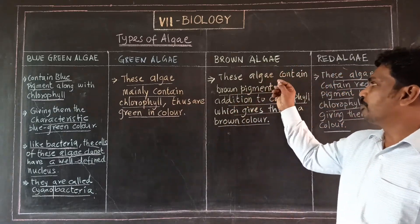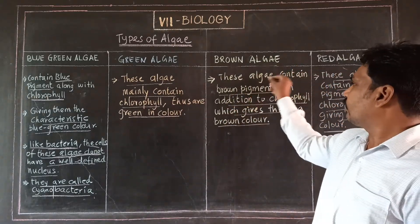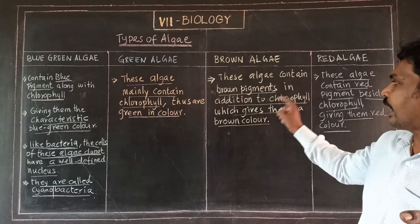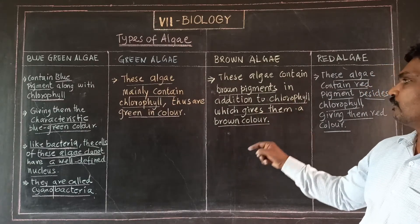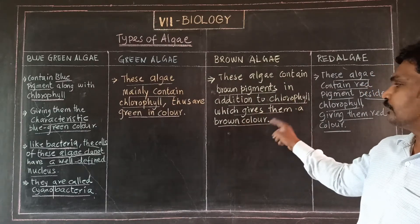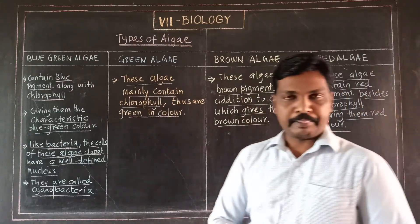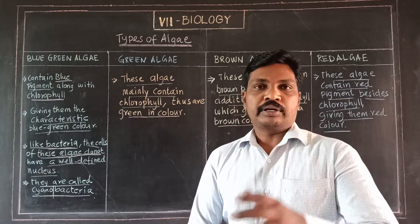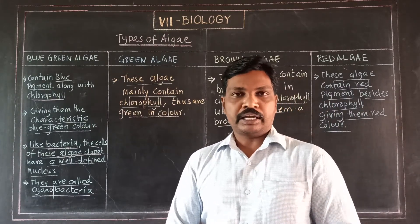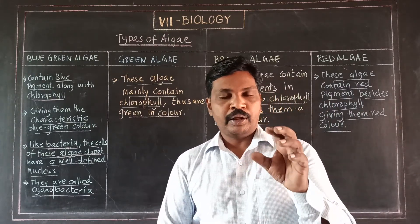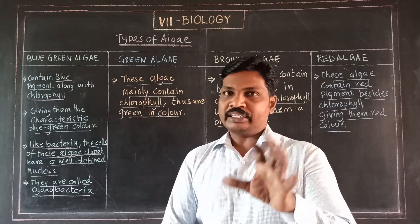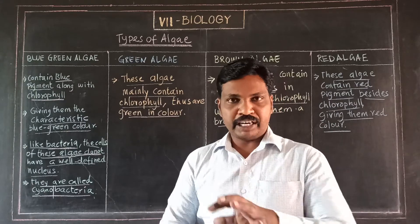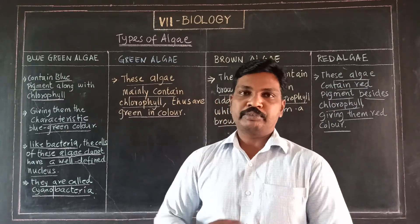Brown algae have a brown pigment in addition to chlorophyll, which gives them their brown color. The brown pigment is the primary accessory pigment. We can separate this pigment from chlorophyll.